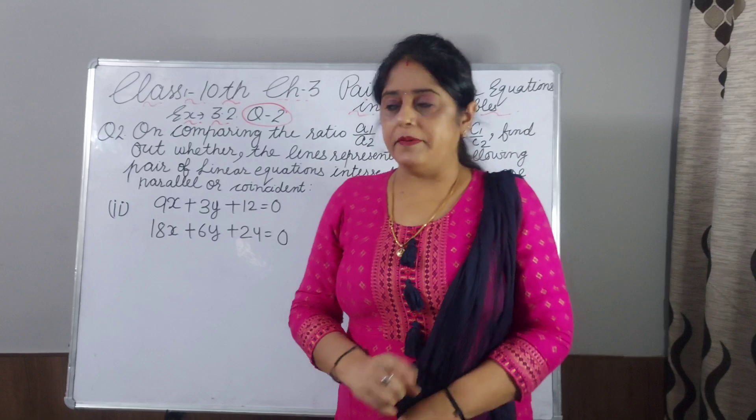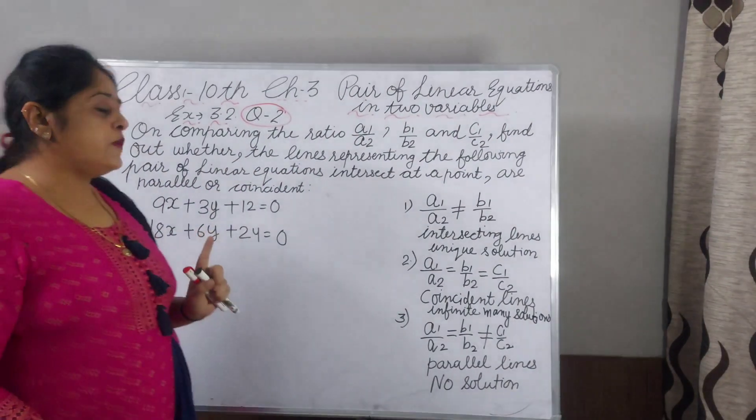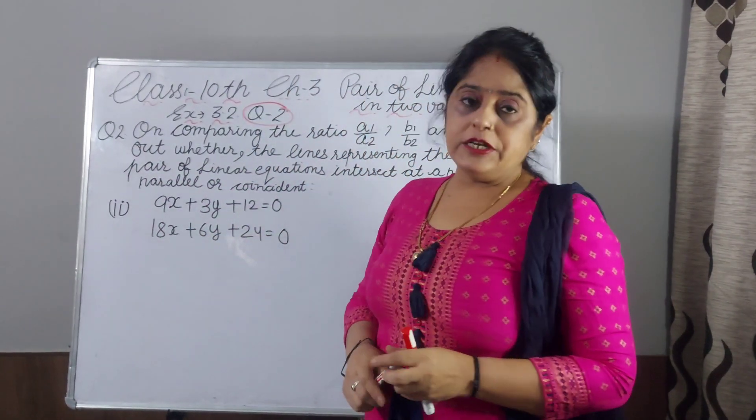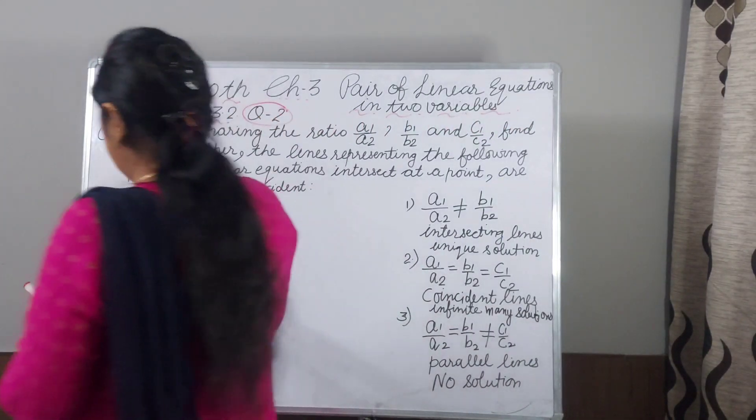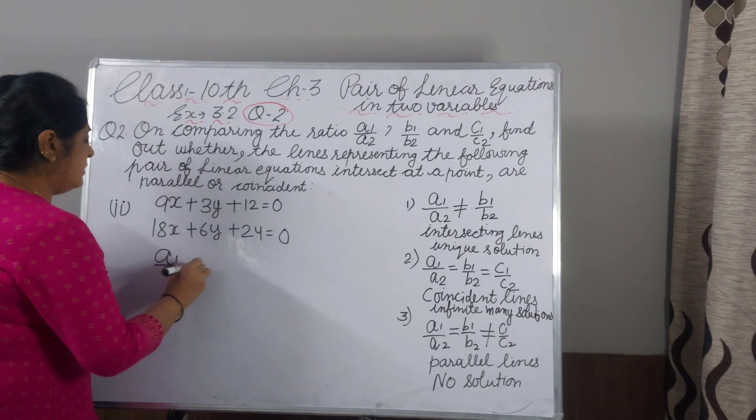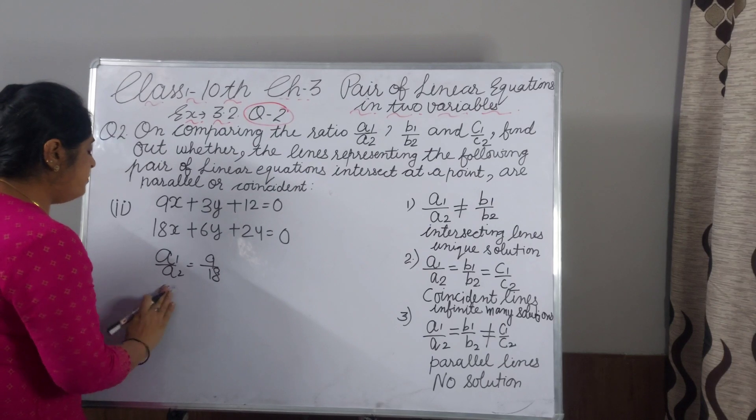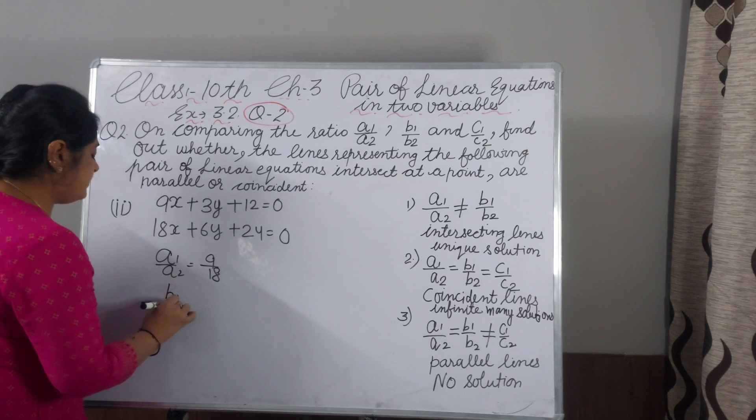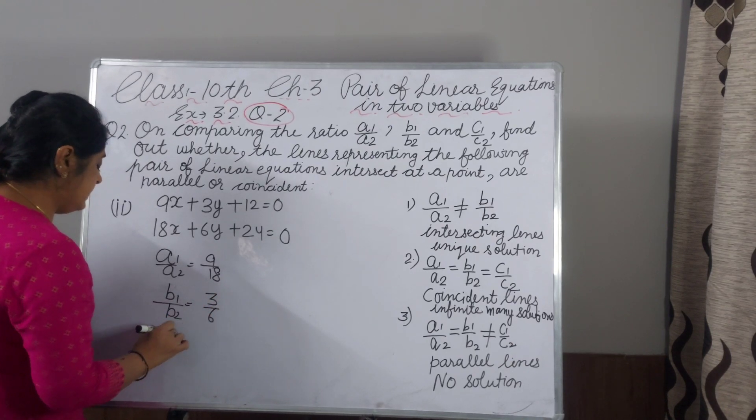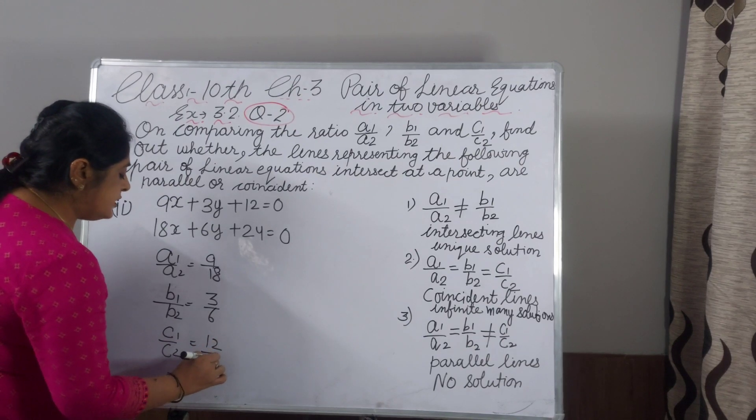Now, second part. Second part equation is 9x plus 3y plus 12 equal to 0, and 18x plus 6y plus 24 equal to 0. First, we will write A1 by A2, which is 9 by 18. Now B1 by B2, 3 by 6. C1 by C2, 12 by 24.